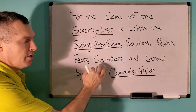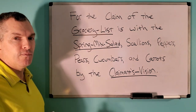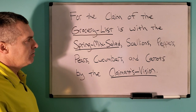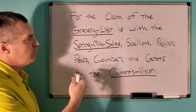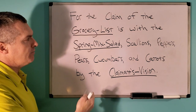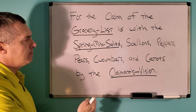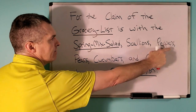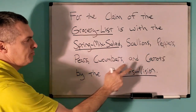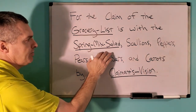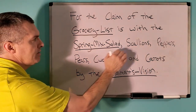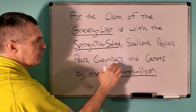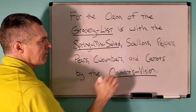The comma functions as the joining of a set. This is a set of things — it's a group of things: spring mix salad, scallions, peppers, pears, cucumbers, and carrots.